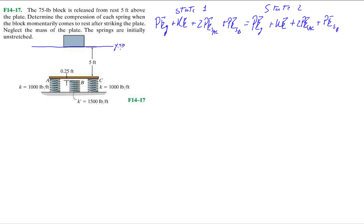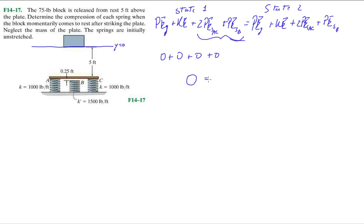The way they set it up, because y equals zero here and the block starts from rest, it has zero gravitational potential energy, zero kinetic energy, and all three springs are uncompressed, so they don't have any potential energies — it's plus zero, plus zero. This tells you that because the system starts with zero energy, all the energy at state two has to add up to zero as well.